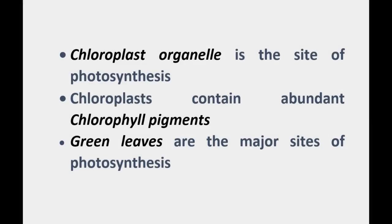Photosynthesis takes place inside cellular organelles called chloroplasts, which contain abundant photosynthetic pigments called chlorophyll. Chloroplasts are found in abundance in green leaves and are therefore the major site of photosynthesis in plants.